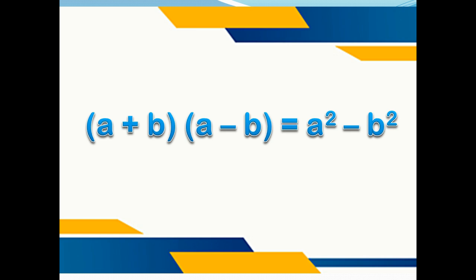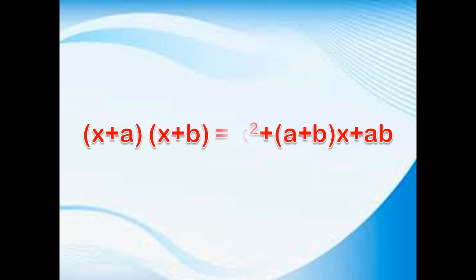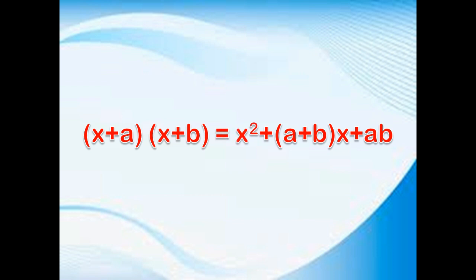A plus B into A minus B is A square minus B square. X plus A into X plus B is X square plus A plus B of X plus AB.